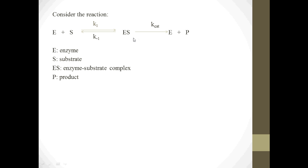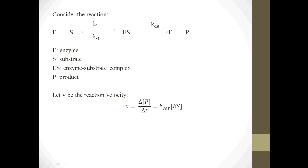The quantity we're especially interested in measuring is the rate of formation of the product P. So I define the reaction velocity V to be equal to the time rate of formation of P — that's delta P divided by delta T. Writing the kinetics equation for that reaction, the only reaction that deals with product is ES forming E plus P governed by Kcat. So the kinetics equation is V equals Kcat times ES.